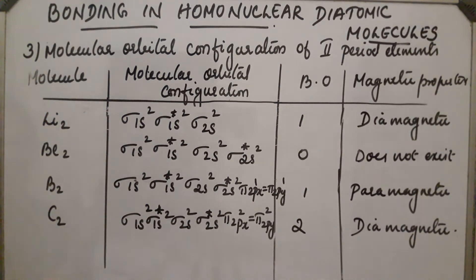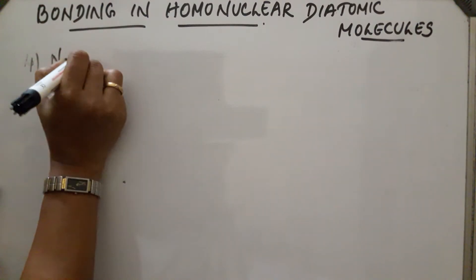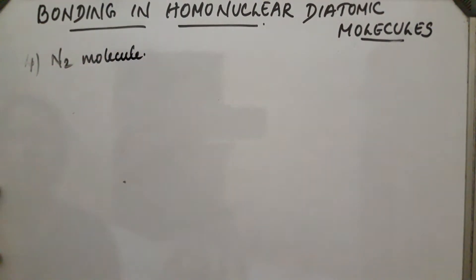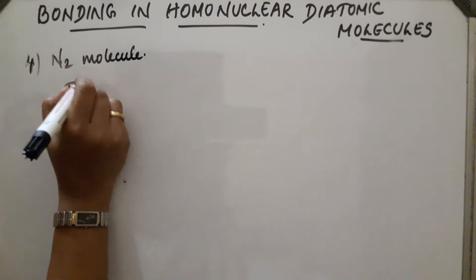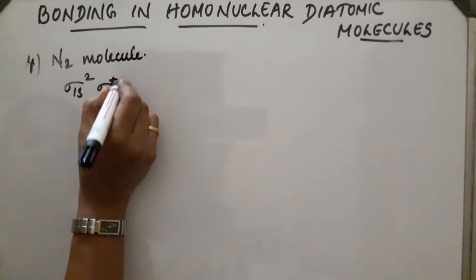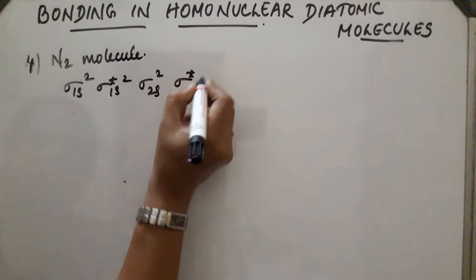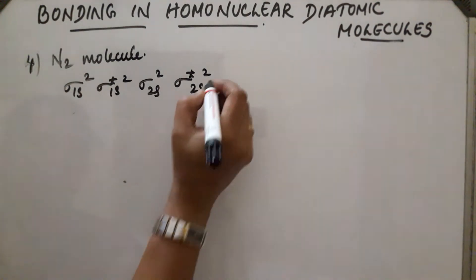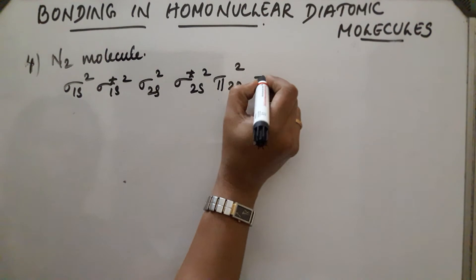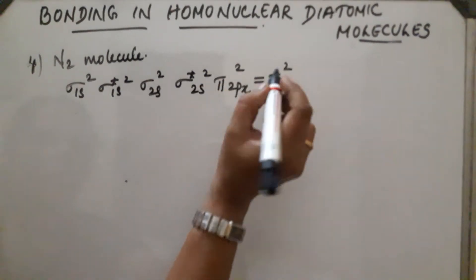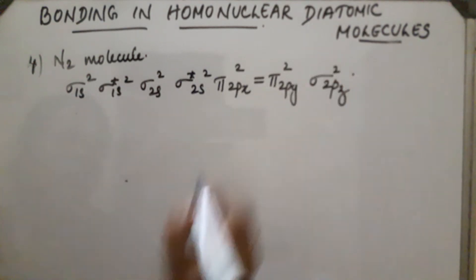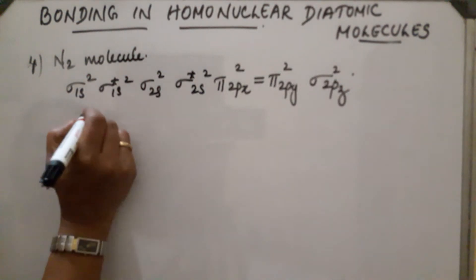Let us discuss a few more examples among second period elements. Next is N₂. The increasing order of energy is the same as in B₂ and C₂. N₂ contains 14 electrons. The electronic configuration is sigma 1s², sigma star 1s², sigma 2s², sigma star 2s², then pi 2px and pi 2py at the same energy, followed by sigma 2pz with 2 electrons. The molecule is diamagnetic because it contains no unpaired electrons.